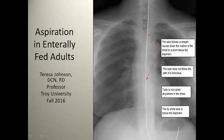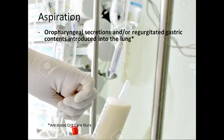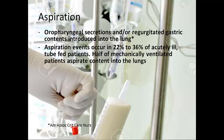Welcome to this short lecture on aspiration in enterally or tube-fed adults. Aspiration is defined as oral pharyngeal secretions and/or regurgitated gastric contents introduced into the lung. According to recent studies, aspiration events occur in 22% to 36% of acutely ill patients, measured in four-hour intervals of nursing evaluation at patient bedside. Half of mechanically ventilated patients who are also tube-fed aspirate content into the lungs, so this occurs very frequently in the hospital population.